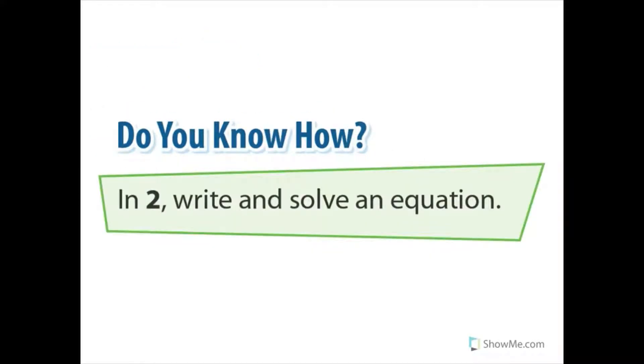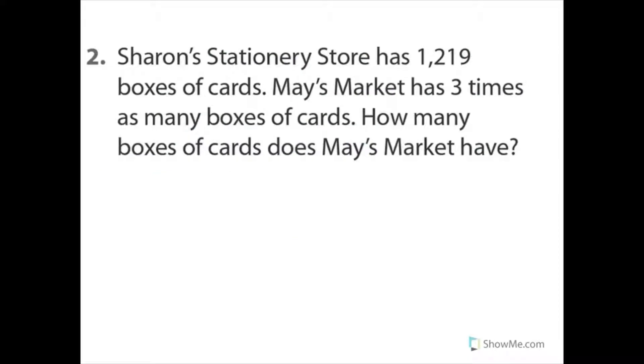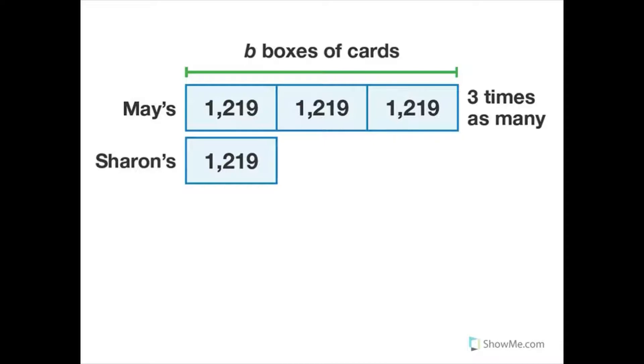Alright, so in two, write and solve an equation. CERN Stationery Store has 1,219 boxes of cards. May's Market has three times as many boxes of cards. How many boxes of cards does May's Market have? And we get that box problem right here. And we've got a little bar diagram. So it says Sharon has this many and May's has this many.